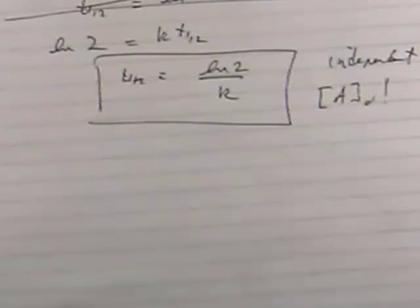It means that if I start out with a ton of a compound, the time it takes to go from a ton to half a ton, let's say 10 days, but if I had one gram, the time it would take to go from one gram to half a gram is still 10 days.